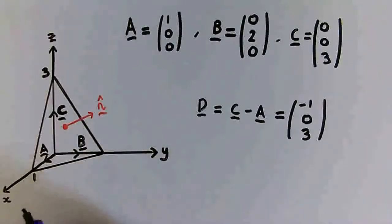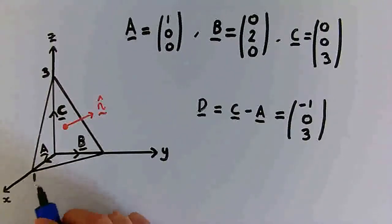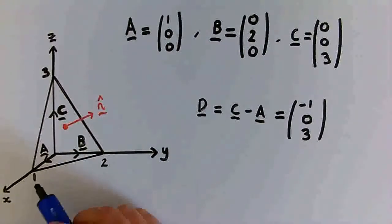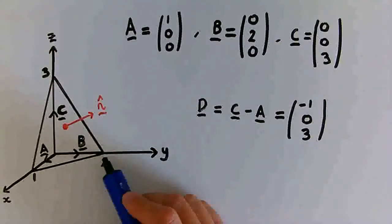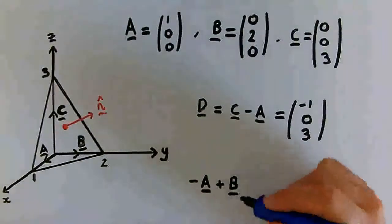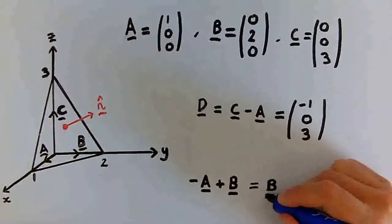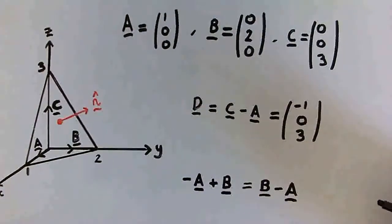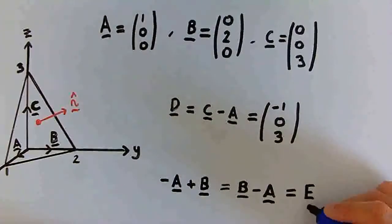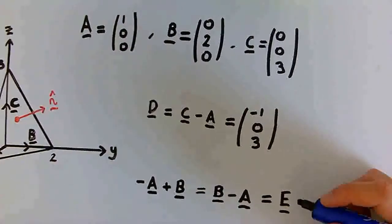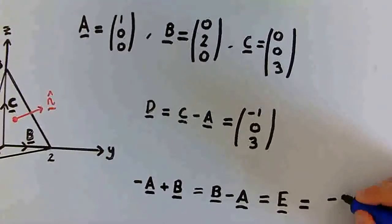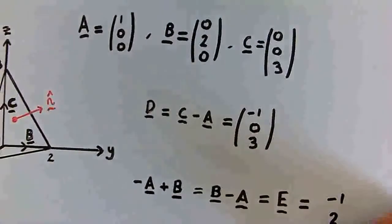Now, in a similar way, if we wanted to travel from this point at 1 on the x-axis to this point at 2 on the y-axis, if we wanted a vector expression for this, we would go backwards along A and forwards along B. So we would have minus A plus B, equivalently B minus A. And let's define this as a new vector E that also exists on this plane. And then using the column vectors above, we can say that E is equal to 0 minus 1 is -1, 2 minus 0 is 2, and 0 minus 0 is 0.